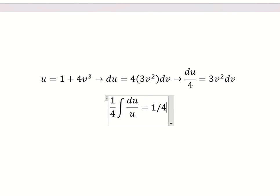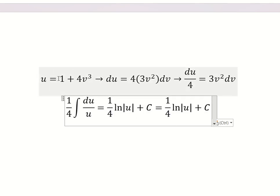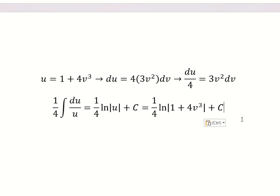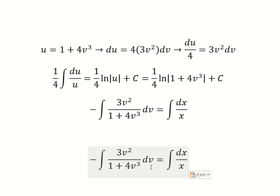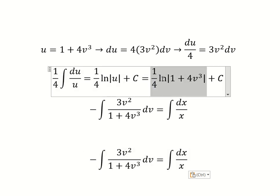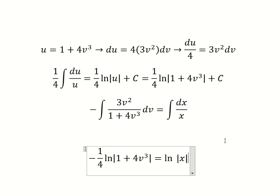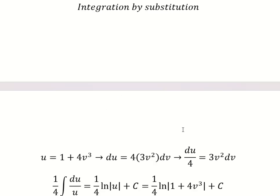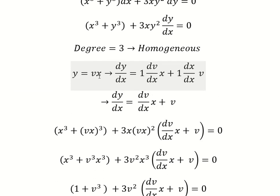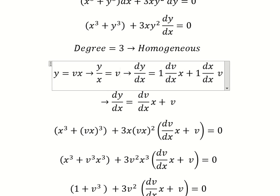Now we have the final answer in terms of u. We need to return back and substitute u back. This gives us ln of the absolute value of s, plus constant C. Since v equals y over s, we divide both sides by s and substitute back to get the answer in terms of y and s.